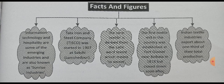TISCO — Tata Iron and Steel Company — was started in 1907 at Sakchi, which is the ancient name of Jamshedpur. The term 'textile' is derived from the Latin word 'textura,' which means to weave. The first textile mill in the country was established at Fort Gloucester near Calcutta in 1818, but it was closed down due to problems. Finally, the Indian textile industry exports about one-third of its total production.